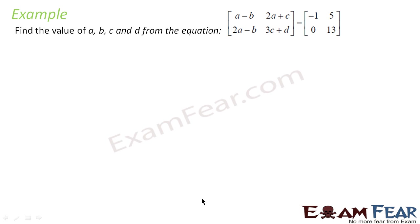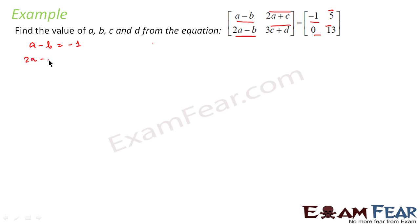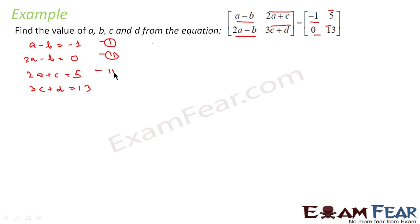In this example we have to find the values of a, b, c, and d. Both matrices are equal, so: a − b = −1 (equation 1), 2a − b = 0 (equation 2), 2a + c = 5 (equation 3), and 3c + d = 13 (equation 4). We now have four equations to solve.